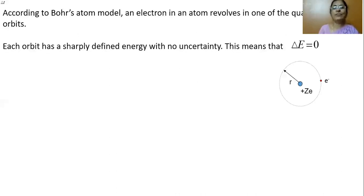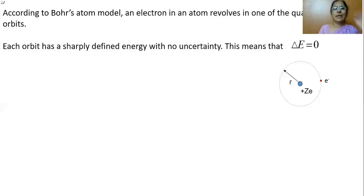Bohr gave an expression for the energy of the electron in various orbits. For example, the energy of the electron in the nth orbit is given as minus 13.6 by n squared electron volts, where n is the principal quantum number. So for the first orbit, the energy is exactly minus 13.6 electron volts. There is no uncertainty at all — Bohr exactly calculated the energy of the electron in the first orbit.